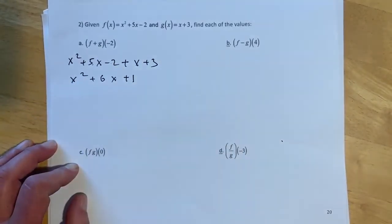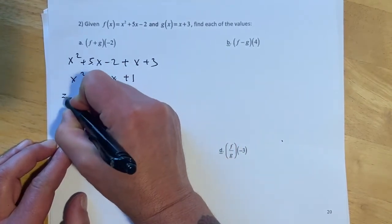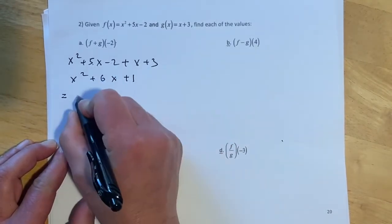So this will be plus 6x minus 2 of 3 is plus 1. So that's f plus g. And now if I evaluate that at negative 2, I'm just going to do an equals from here, because I didn't leave myself very good room.